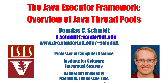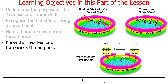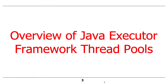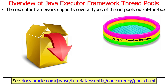Now that we've talked about thread pools in general, let's zoom in and talk about the Java thread pools. You'll see that there are three general types of thread pools, with the ability to make others based on various factors. The Executor Framework, which is the focus of this series of lectures, supports several different types of thread pools out of the box — there are three or four different variants.